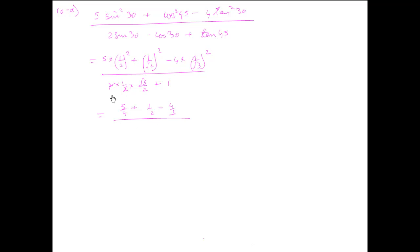2 will cancel to give us root 3 by 2 plus 1. The LCM of the numerator would come out to be 12, so that would give us 5 times 3 is 15.